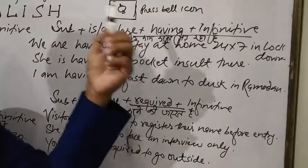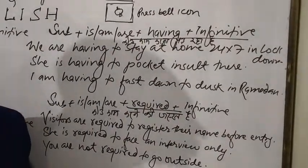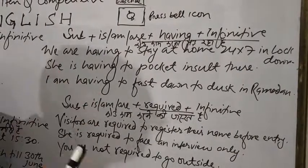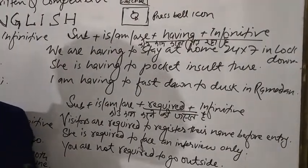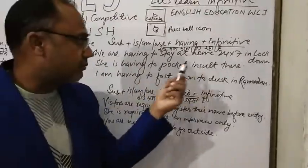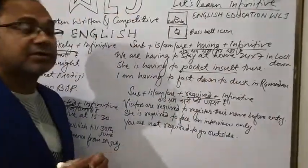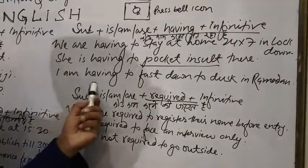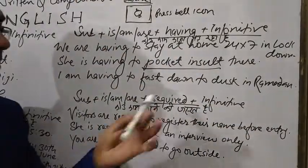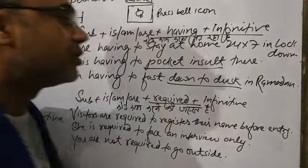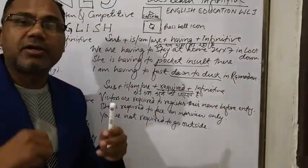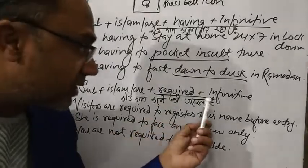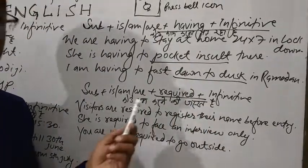Part 3: Subject + is/am/are + having to + infinitive. This is a very meaningful and highly used structure in the language. 'Having to' means something is compulsory or necessary. For example: 'We are having to stay at home 24/7 in lockdown — stay home, stay safe, stay healthy.' Another example: 'I am having to fast from dawn to dusk in Ramadan.'